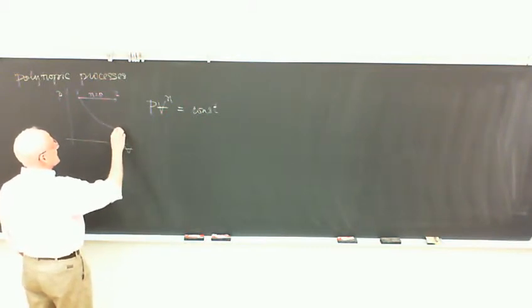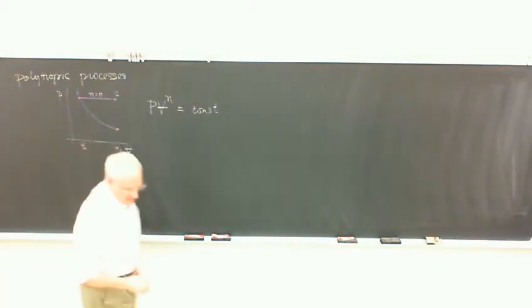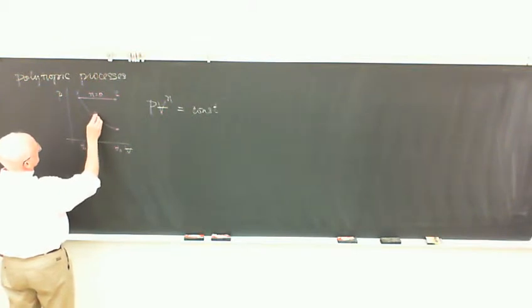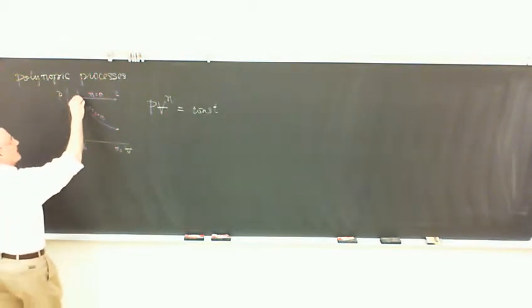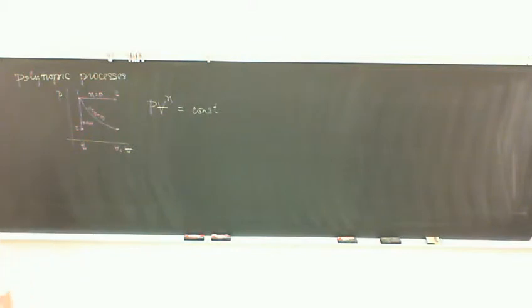And we looked at a couple of those on the P-V diagrams. If N equals zero, starting from some point maybe there to some point there, that was the N equals zero line and that was a constant pressure line. The N equals infinity was the constant volume process.